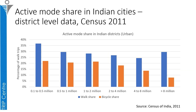Census 2011 data recorded details on work trips and how people access their jobs. Here I draw a comparison of how active mobility varies with respect to population size in Indian cities for the work trip. The walk share ranges from 25 to 35 percent, whereas bicycle share ranges from 8 percent in cities of 8 million population to around 22 percent in cities of 0.1 to 0.5 million population. Overall, active mobility share ranges from 38 to 59 percent. While there is not much variation in walk share between cities of varying population size, there is a significant decline in bicycle share with respect to population size.